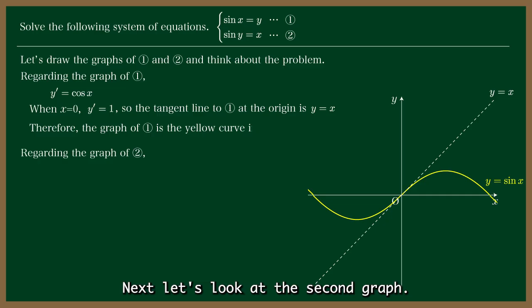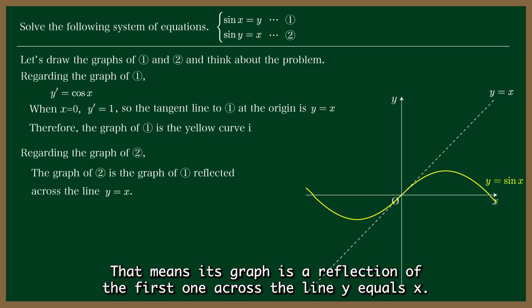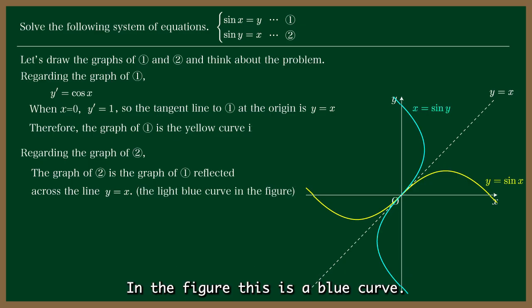Next, let's look at the second graph. This one is basically the same as the first, but with x and y swapped. That means its graph is a reflection of the first one across the line y equals x. In the figure, this is a blue curve.